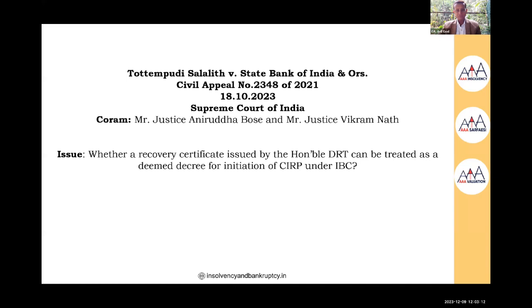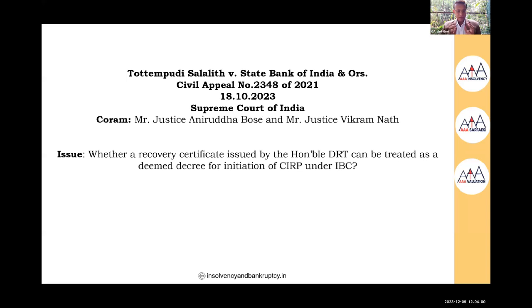Answering a question about a person whose properties including home are under SARFAESI action while his company is already in CIRP: the person can file an application under Section 94 before the NCLT or DRT seeking initiation of his individual insolvency resolution process. Immediately upon filing, the moratorium will be applicable and no one will be able to sell any asset of that individual — the SARFAESI action will be completely stayed. During the insolvency process the individual has the right to submit a repayment plan.